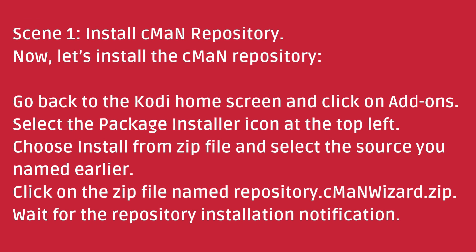Let's install the CMAN Repository. Go back to the Kodi home screen and click on Add-ons. Select the Package Installer icon at the top left. Choose Install from .zip file and select the source you named earlier. Click on the .zip file named repository.cmanwizard.zip. Wait for the repository installation notification.